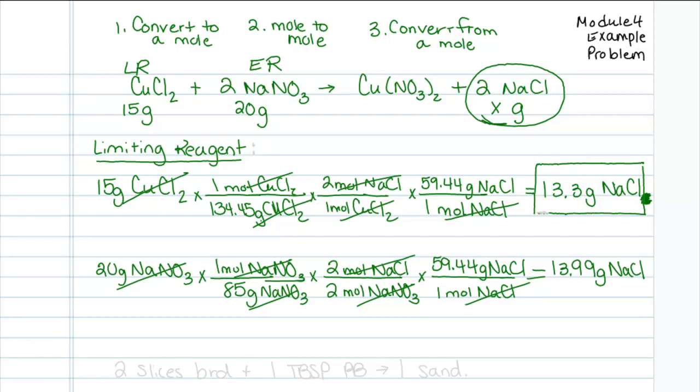There's no way that I could get 13.99 grams because I don't have enough copper chloride. So what we see is think about no more than the least. You cannot produce more product than the least amount of product.